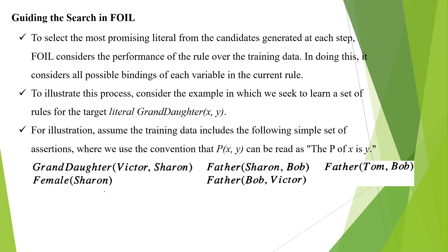For example, using the Sharon and Bob data, some predicates considered include granddaughter. Based on the given training data, these predicates are used to identify the target concept. The target literal here is granddaughter(X, Y) — whether Y is the granddaughter of X or not — and all the given predicates are used to determine this.